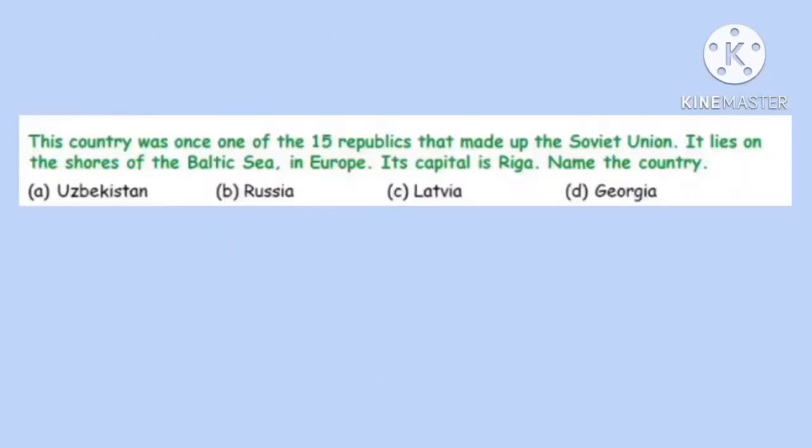Question 1. This country was once one of the 15 republics that made up the Soviet Union. It lies on the shores of the Baltic Sea in Europe. Its capital is Riga — name the country. Correct option is C: Latvia.